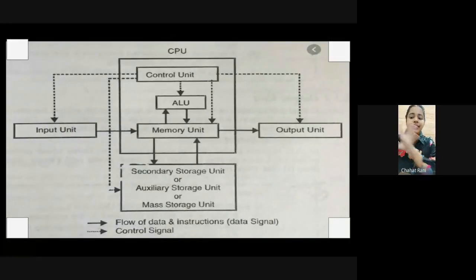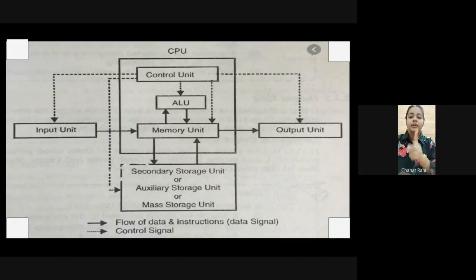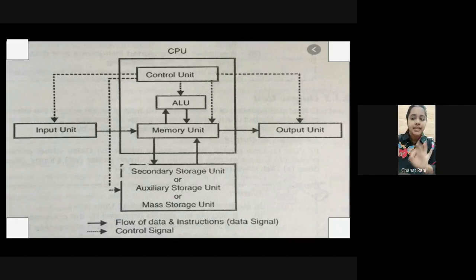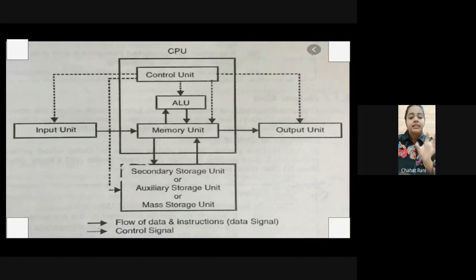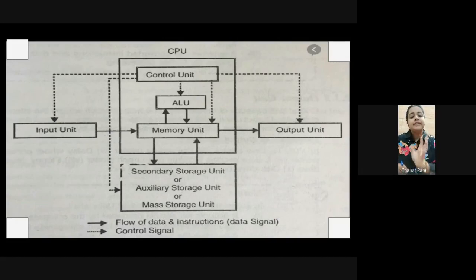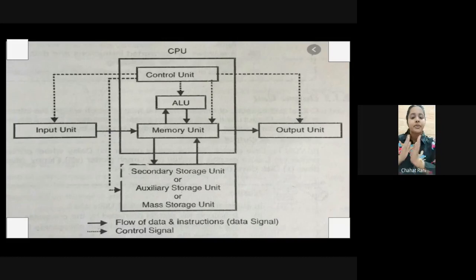Before we start, let us see the flow of data and instructions. The control unit controls each and every unit in the system - it controls the secondary memory, input/output units, and memory units. The flow of data and instructions goes through the IPO cycle: input gives input to the CPU, the CPU processes it using secondary storage, and then gives the output to the output unit. So the flow is: Input, Processing, then Output.